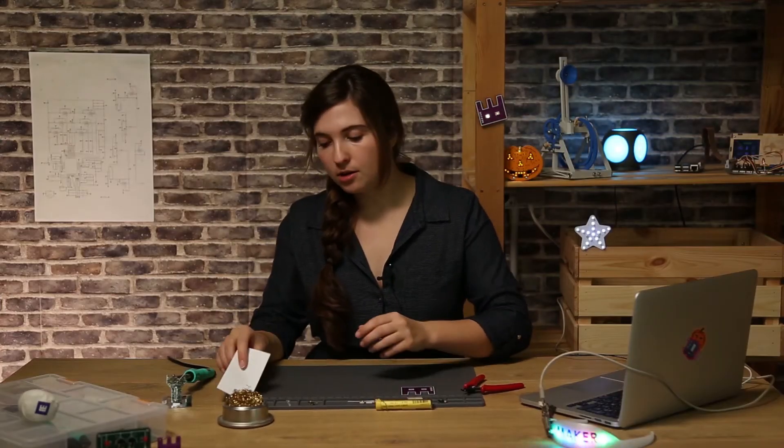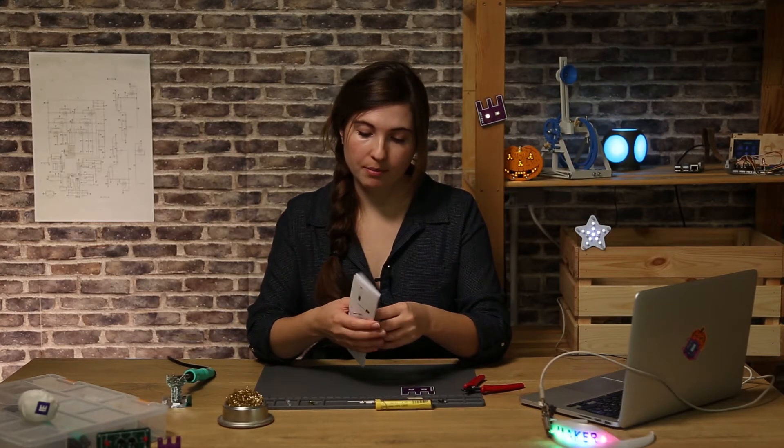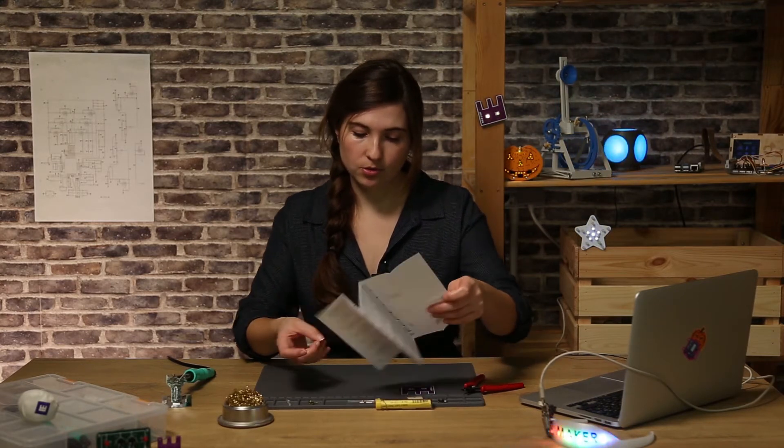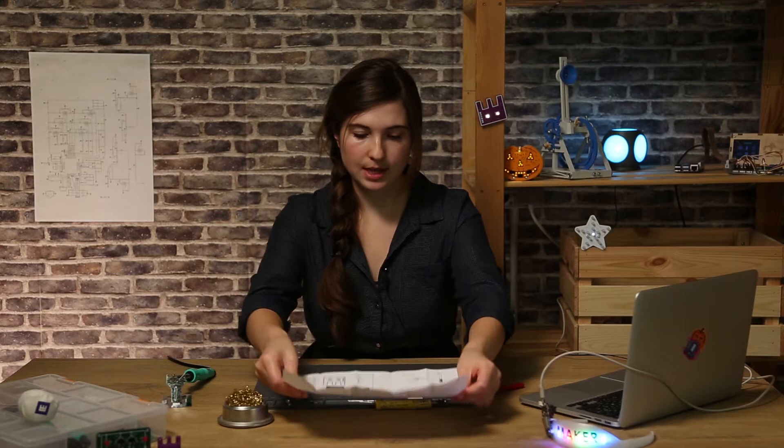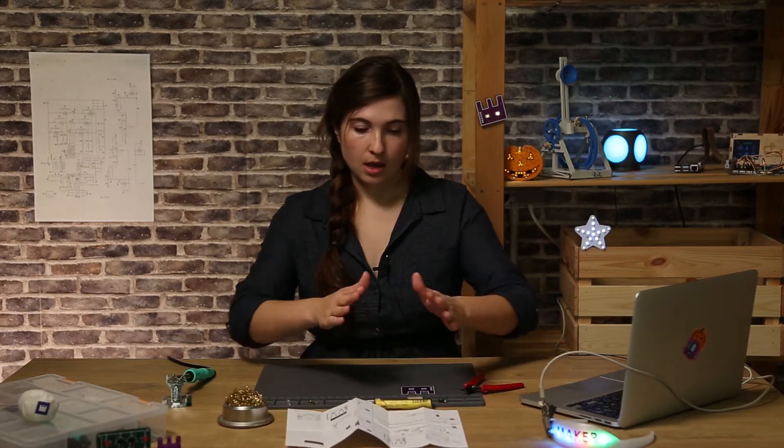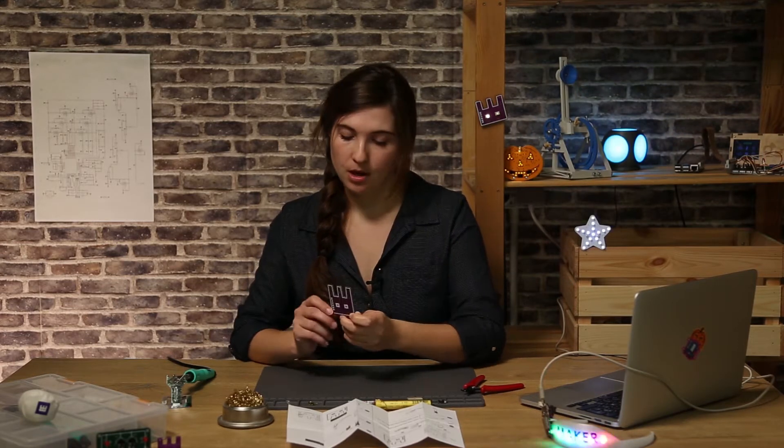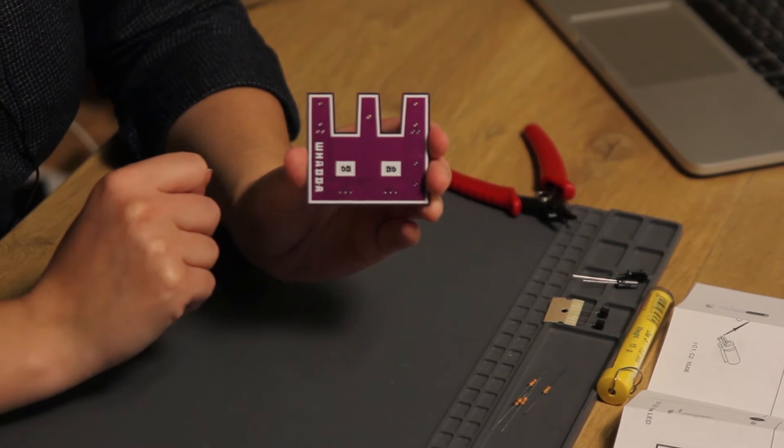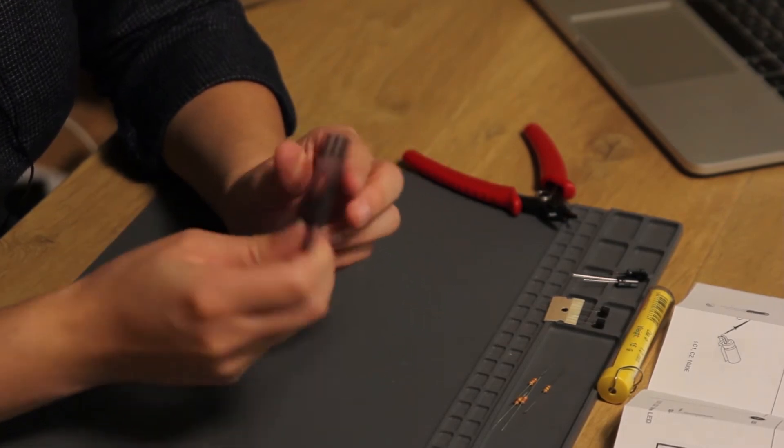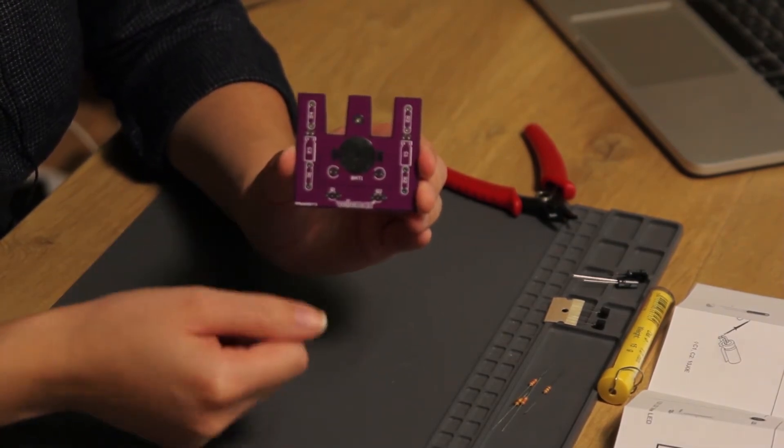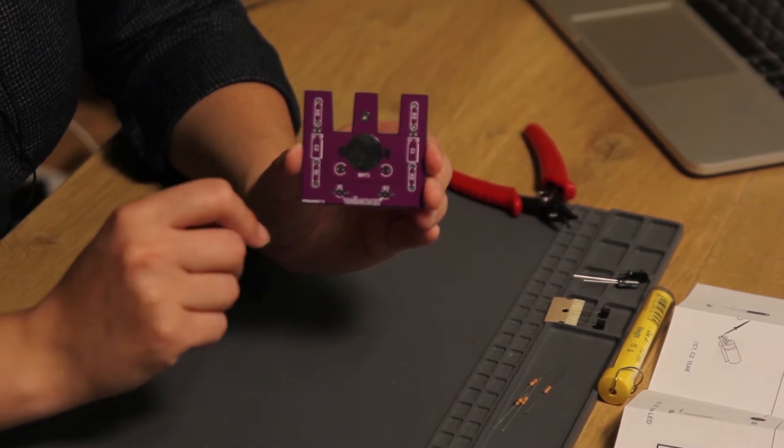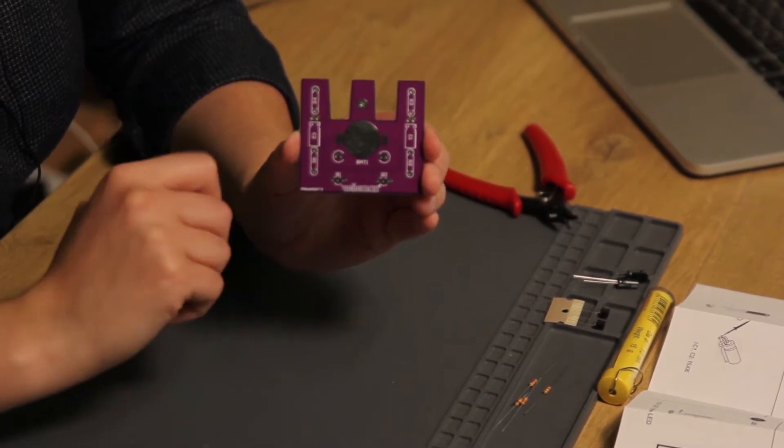Alright, let's start by opening the manual and placing it in front of us so we can follow each step. As the manual states we'll first have to take a look at the PCB which has a front side and a back side. On the front side we will be placing the LEDs and on the back side we'll place all the other components and this is also the side where we will be soldering.